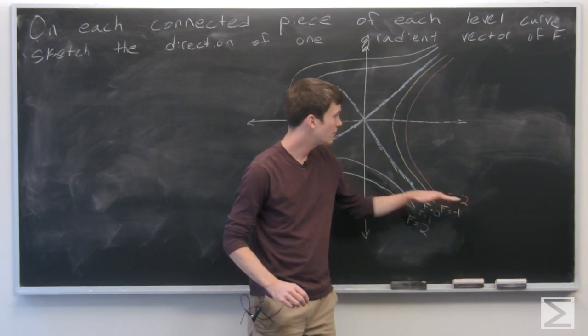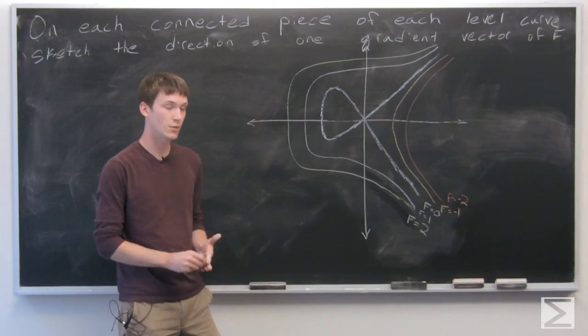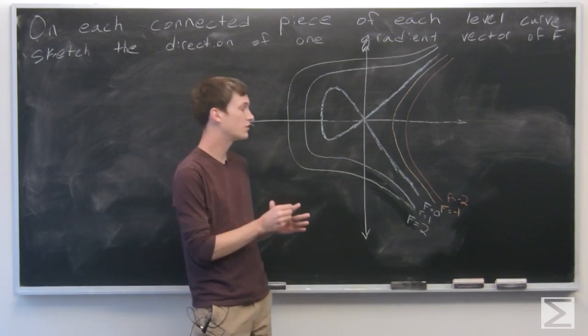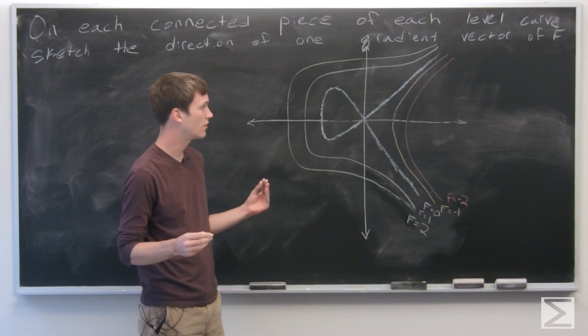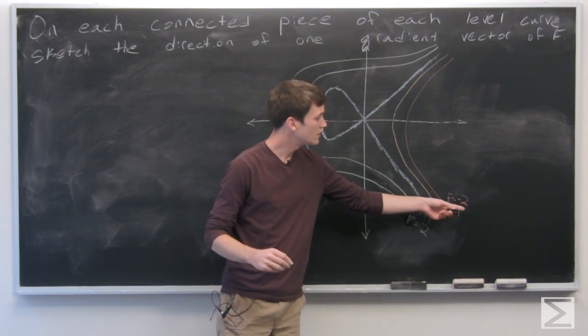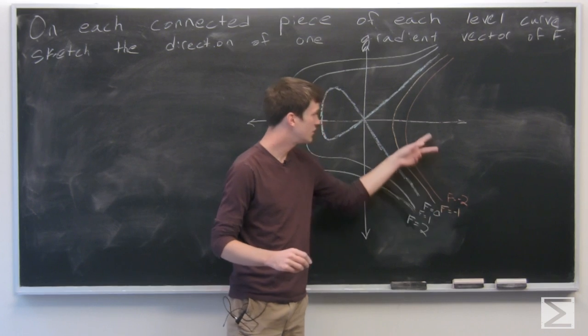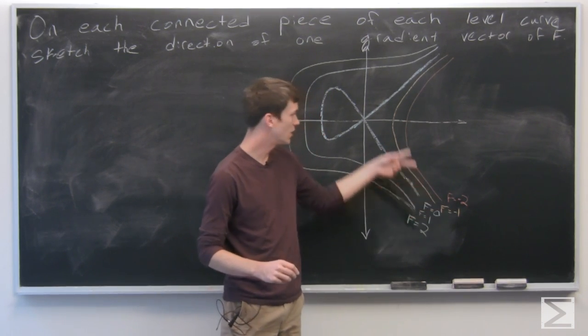We know that the gradient vector is going to be pointing perpendicular to the curve and in the direction of increasing f. So we see that f is negative 2 on this red line.